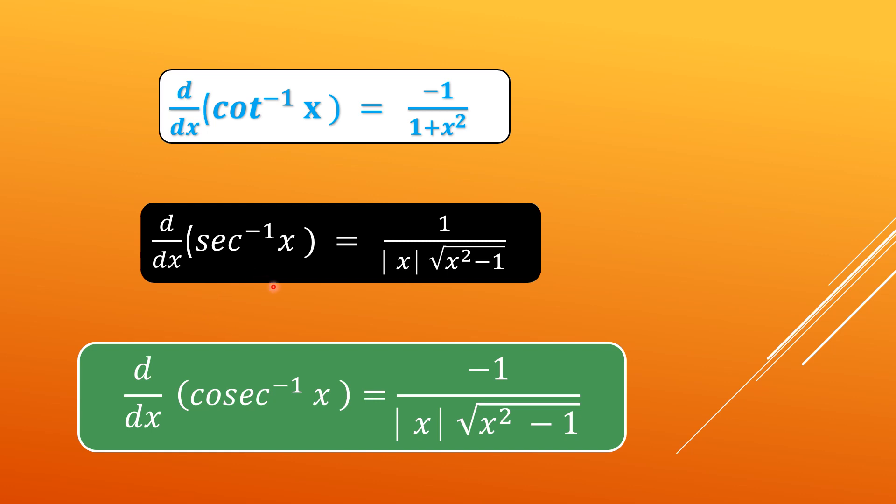Now, derivative of secant inverse x is taken as 1 upon modulus x under root of x square minus 1. And the derivative of cosec inverse x is taken as minus 1 upon modulus x under root of x square minus 1.